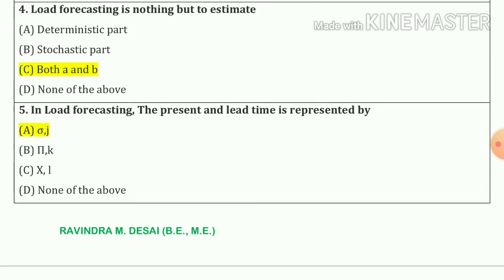Question number 5. In load forecasting, the present and lead time is represented by — the present is represented by sigma and lead time is represented by J. So our answer is option number A.